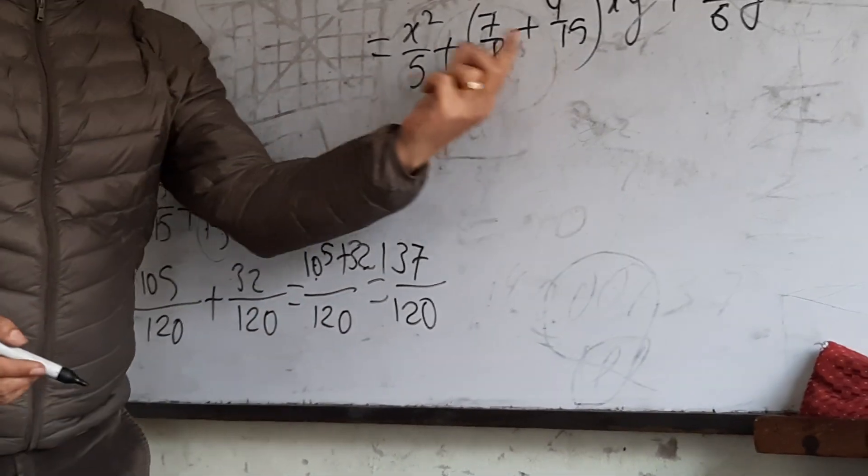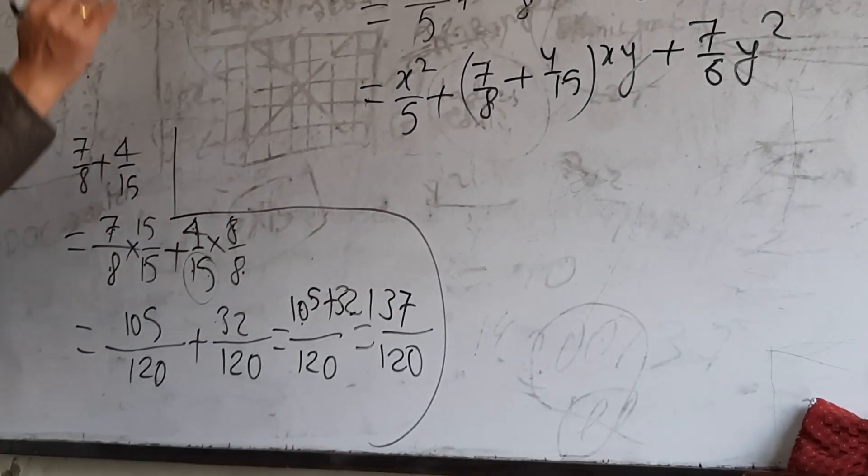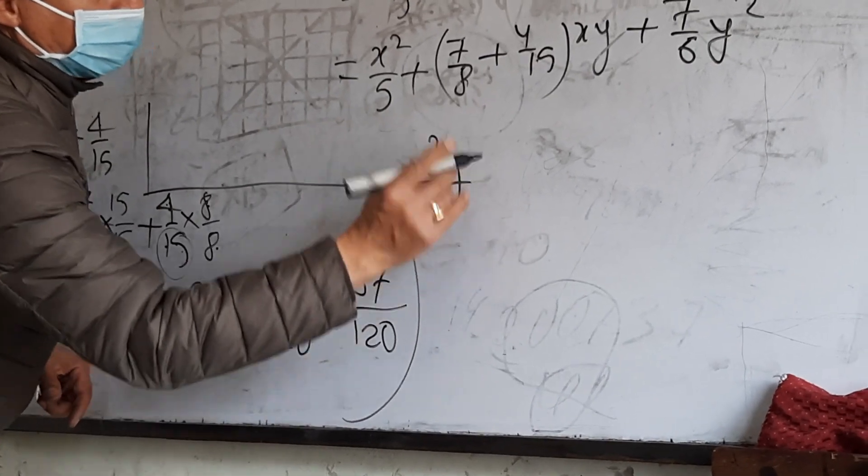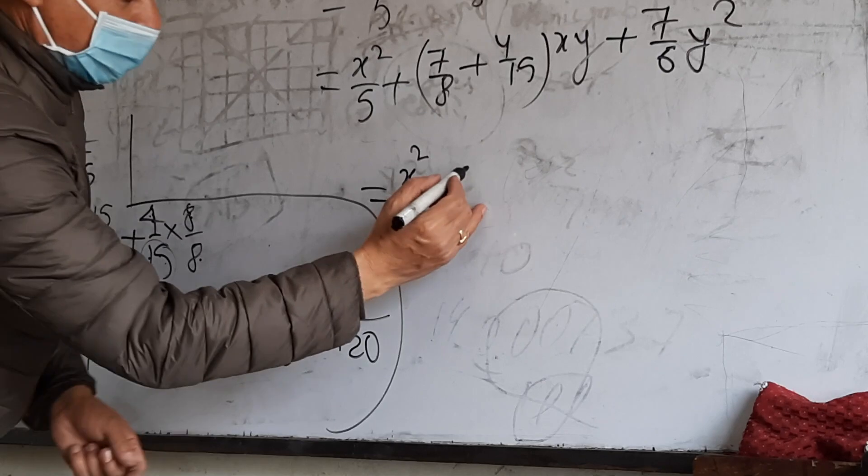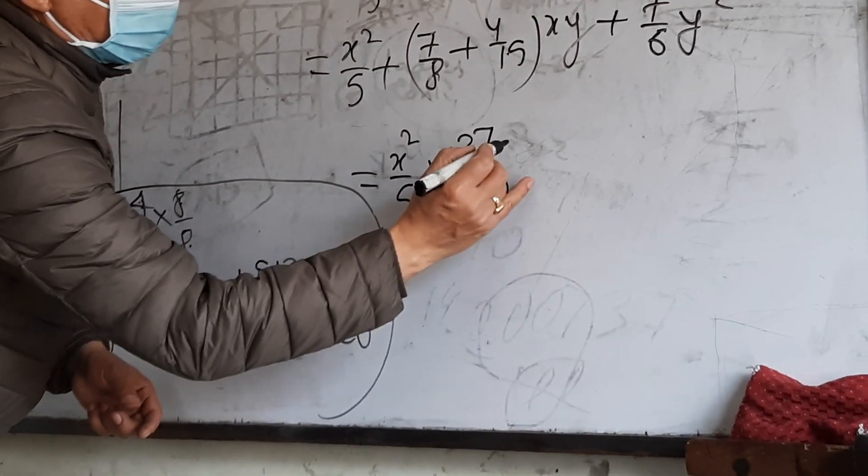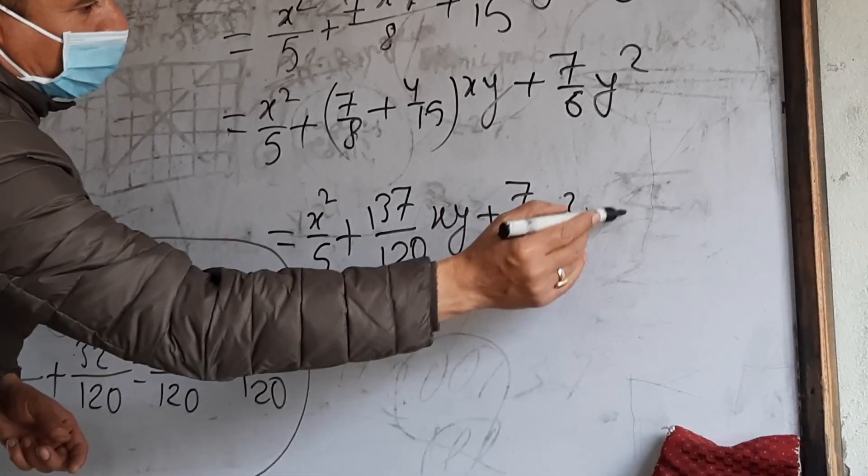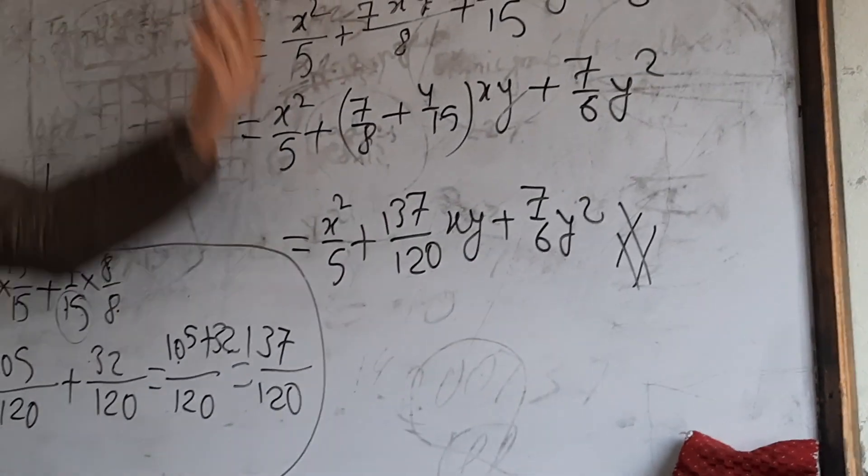What does this mean? This is the same. What does this mean? 6 squared by 5. This is the same. 107 by 120, 8 plus 7 by 6, Y squared. This is the same. What does this mean? How does this mean?